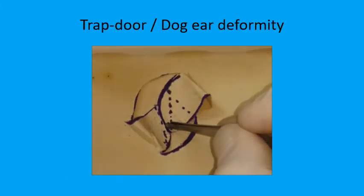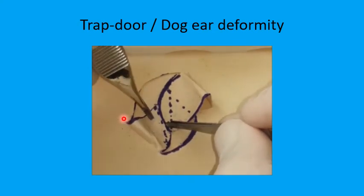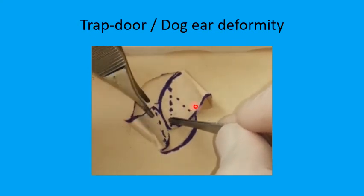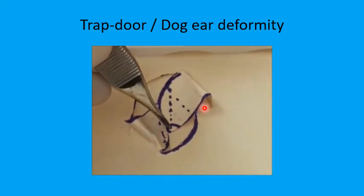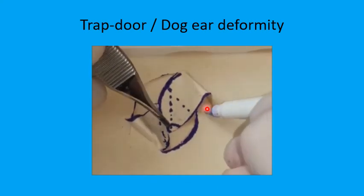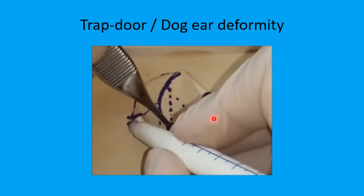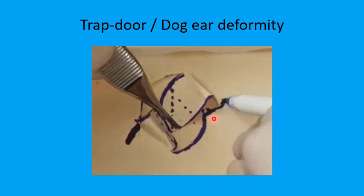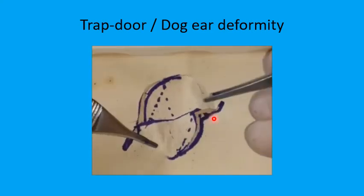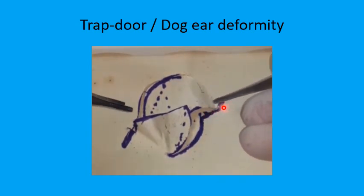It's almost inevitable to get this trap door or dog ear deformity at the base of the two flaps. Sometimes you just need to extend the hook stick incision at the base of the flaps, and this will help in flattening out the flaps when they are sutured in position.